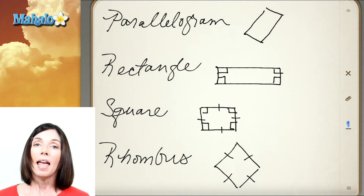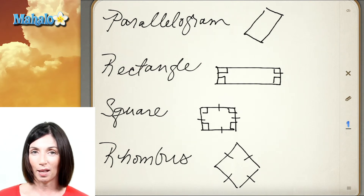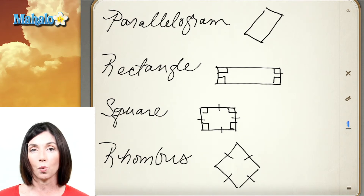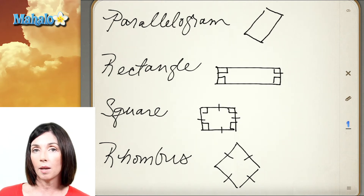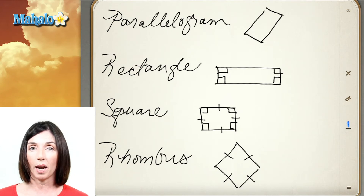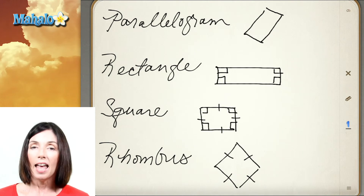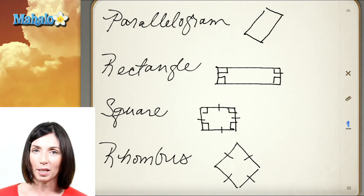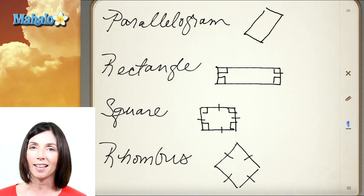Every square is also a rectangle, and every rectangle is also a parallelogram, but it doesn't go the other way — not all parallelograms are rectangles and not all rectangles are squares. They're subcategories. Squares satisfy three conditions: all sides the same length, four right angles, and two pairs of parallel sides. A rectangle only satisfies two of those conditions: four right angles and two pairs of parallel sides. A parallelogram satisfies one of those conditions: two pairs of parallel sides, but the sides don't all meet at right angles. All of these figures come under the larger category of a quadrilateral, which is simply a four-sided closed figure.